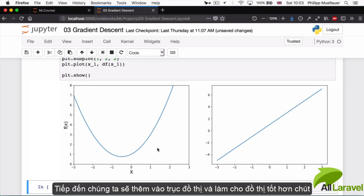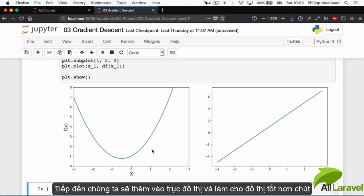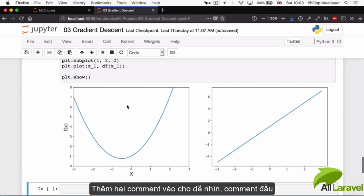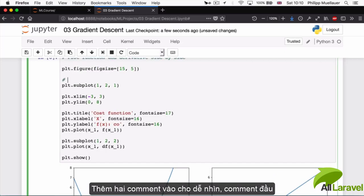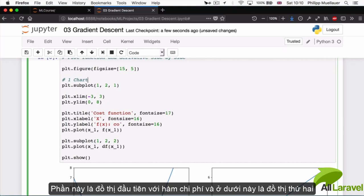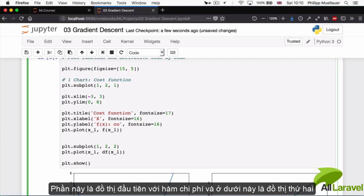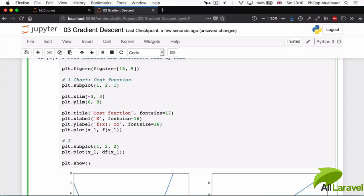Now what I'm going to do is add a few labels and style these graphs a little bit better, so that if you're ever coming back to this notebook in the future, you can make sense of these charts very quickly and very easily. So I'm going to insert two comments first. So this is the first chart, and this is the cost function, and down here is the second chart of the derivative.